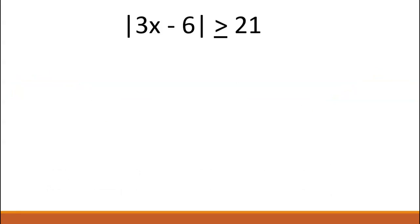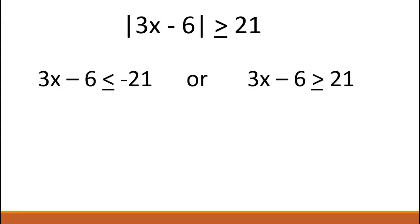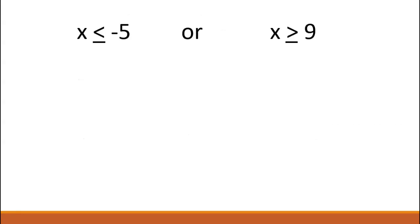Once we have written the expression in the absolute value as an 'or' statement — in this case 3x minus 6 — we just need to finish solving the inequalities. Did you get x is less than or equal to negative 5, or greater than or equal to 9? We have represented the solution set symbolically using inequalities. You try using interval notation and as a graph.